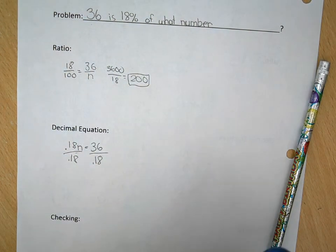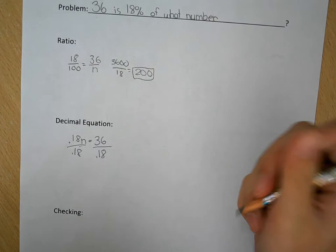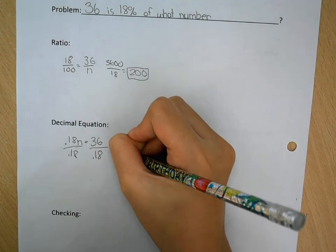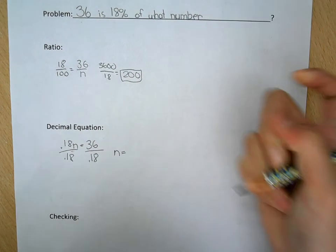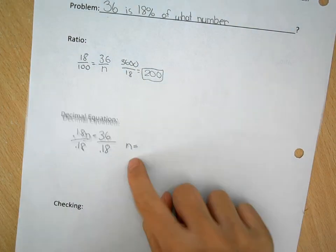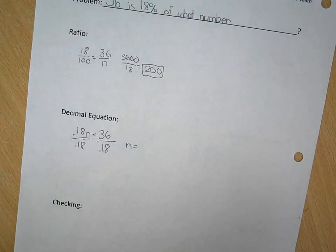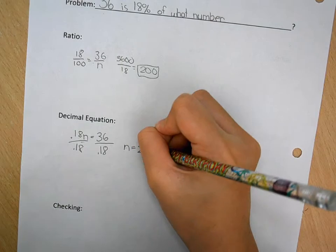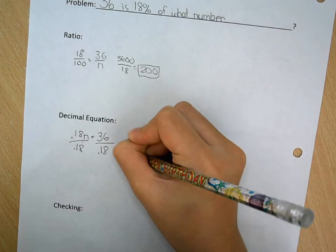So on calculator, this would be just left with N, so N equals, this would be N equals 200. So 36 divided by 0.18 equals 200 again. So yeah, it's pretty close to 175.